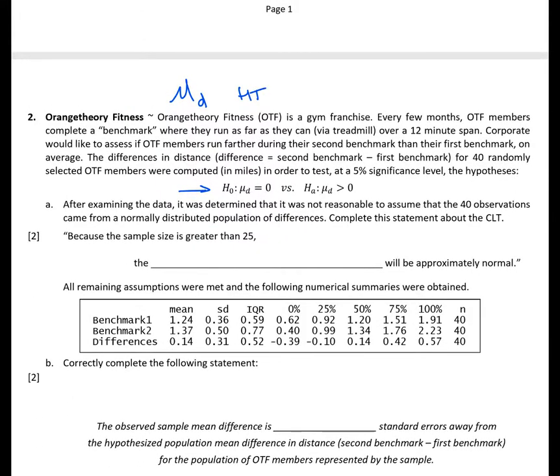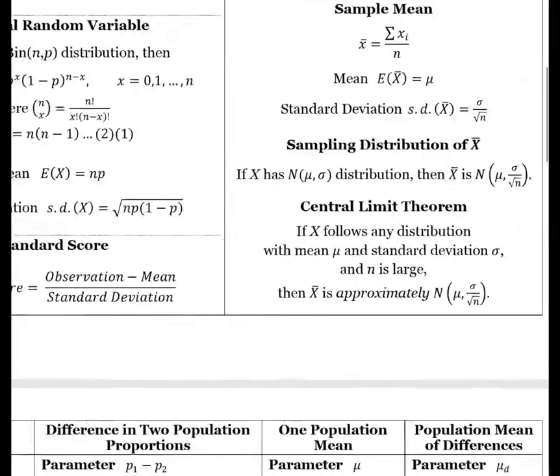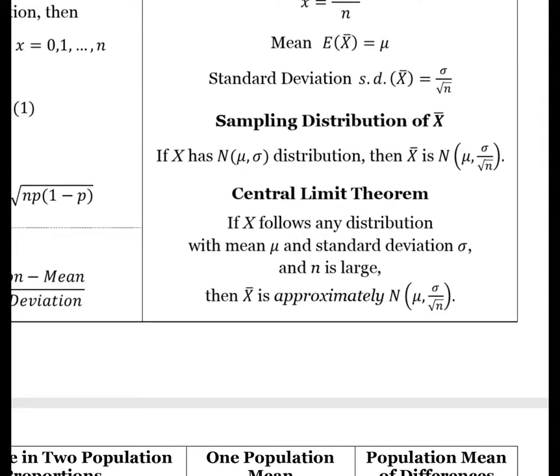Now we can jump into question A. After examining the data, it was determined that it was not reasonable to assume that the 40 observations came from a normally distributed population of differences. Complete this statement about the CLT: Because the sample size is greater than 25, the blank will be approximately normal. If we head over to our help card, we remember there's information about the CLT listed on it. If X follows any distribution with mean mu and standard deviation sigma, and N is large, then X bar is approximately normal.